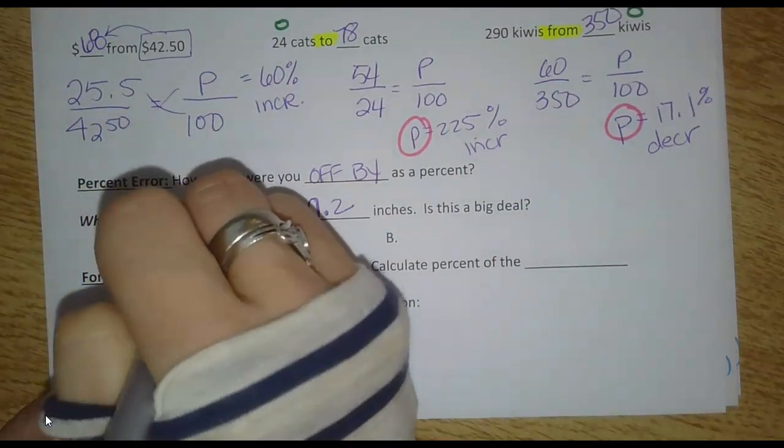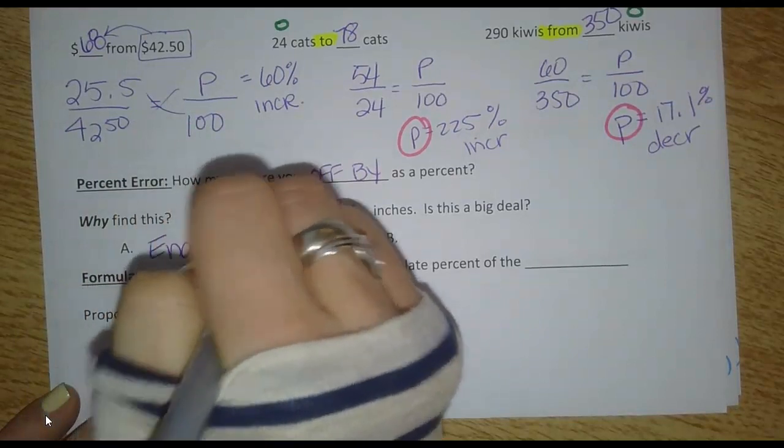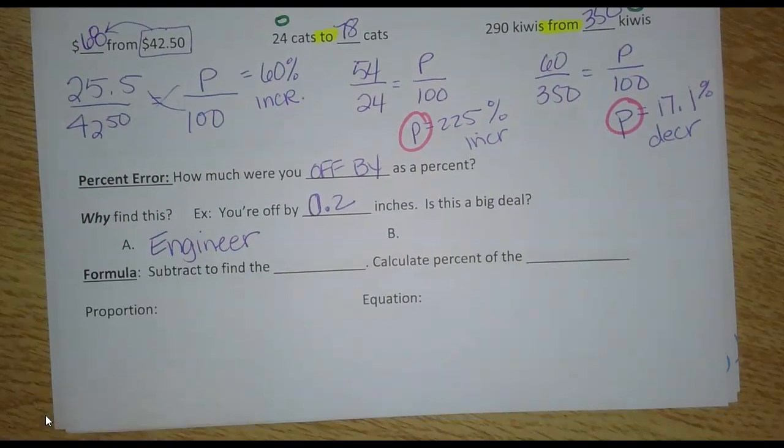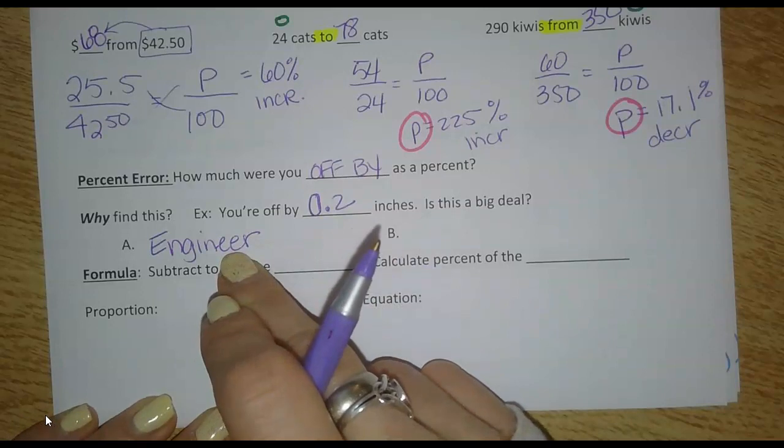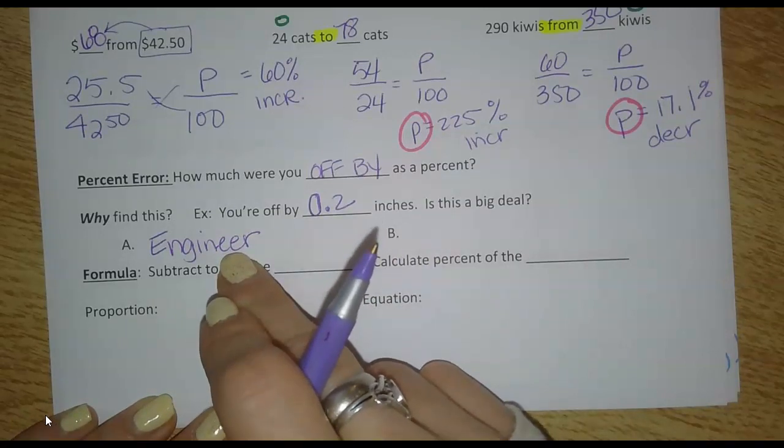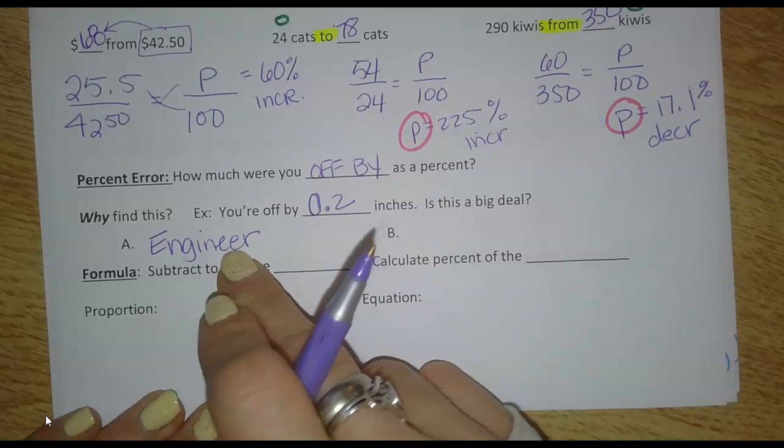Let's say you're an engineer designing brakes on a new car. Would 0.2 or two tenths of an inch maybe make a difference in your calibration of your brakes on your car? Probably. That'd be a really big deal if you were off by that much. It might have a big impact.